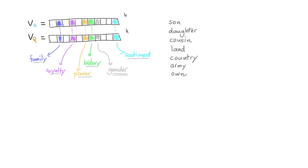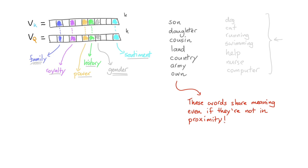And then if I think of words that are not as similar, dog and cat, running, swimming, help, nurse, computer, I think all of these words are less similar. Because however family is encoded, that encoding will not appear in any of these words. And this would also hold true for some of those other words like royalty, history, power and gender. And this does give me a very interesting observation. These words, they share meaning even if they're not in proximity. And the reason why these words share meaning is plausibly due to these meanings that are encoded in the numbers. And that gives us an opportunity to calculate a similarity.